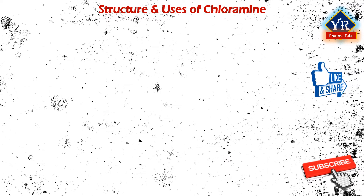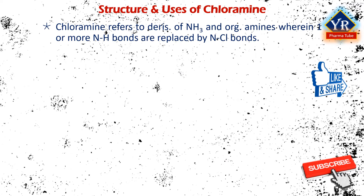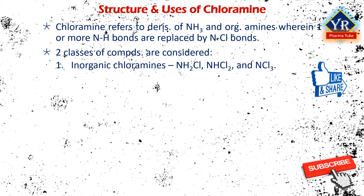Structure and uses of chloramine. Chloramine refers to derivatives of ammonia and organic amines wherein one or more N–H bonds have been replaced by N–Cl bonds. Thus, it is a halide. Two classes of compounds are considered: inorganic chloramines and organic chloramines. Inorganic chloramines comprise three compounds: monochloramine, dichloramine and nitrogen trichloride. Monochloramine is of broad significance as a disinfectant for water. A variety of organic chloramines are useful in organic synthesis, including examples such as N-chloromorpholine, N-chloropiperidine and N-chloroquinuclidinium.